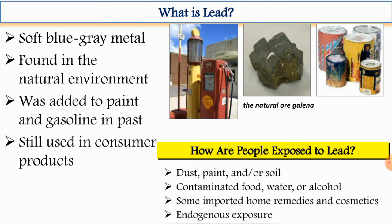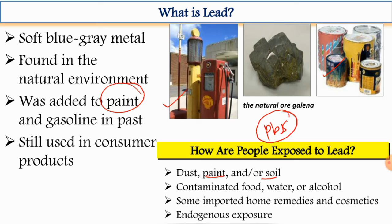We will now deal with lead — also one of the toxic and heavy metals. Galena (PbS) is the ore from which lead is extracted. Lead is a soft blue-gray metal found in the natural environment, mostly present in paint and gasoline in the past. People are exposed to lead by dust, paint, soil, contaminated food, water, alcohol, imported home remedies, and cosmetics — some cosmetics contain lead, so don't use cosmetics that contain lead.